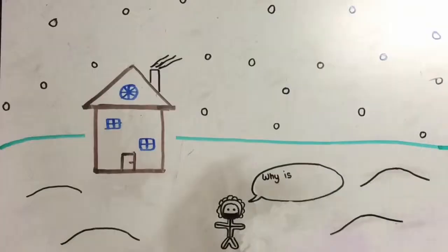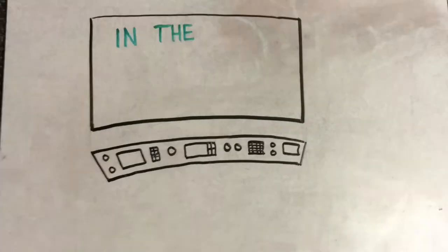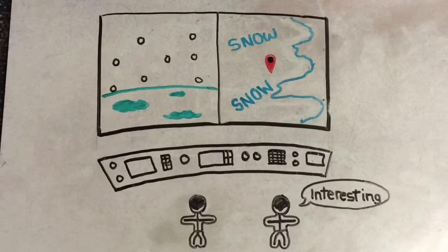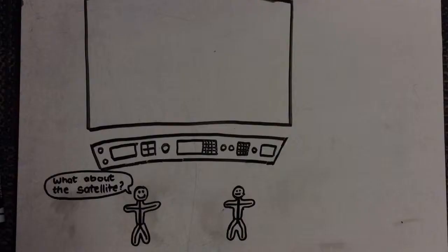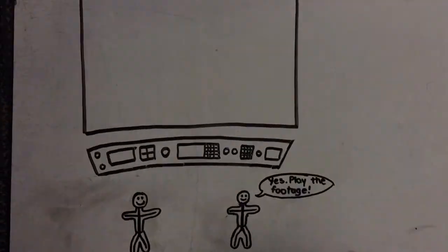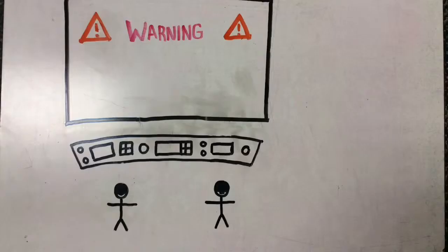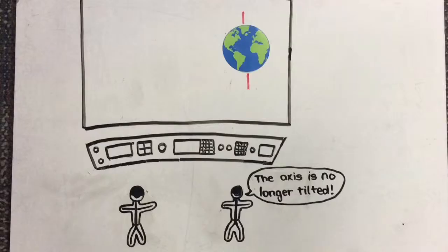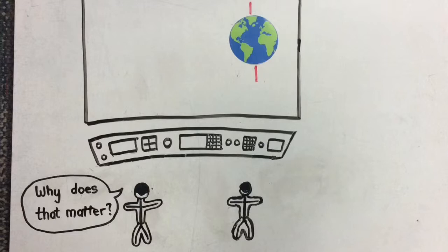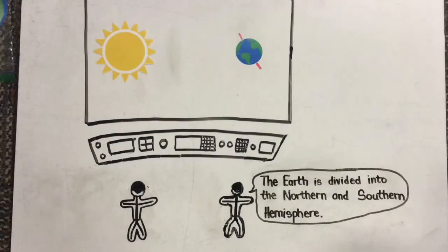Why is it snowing in summer? In the lab. Interesting. What about the satellite? Yes, play the footage. Oh no, the axis is no longer tilted. Why does that matter? Because the seasons depend on it.